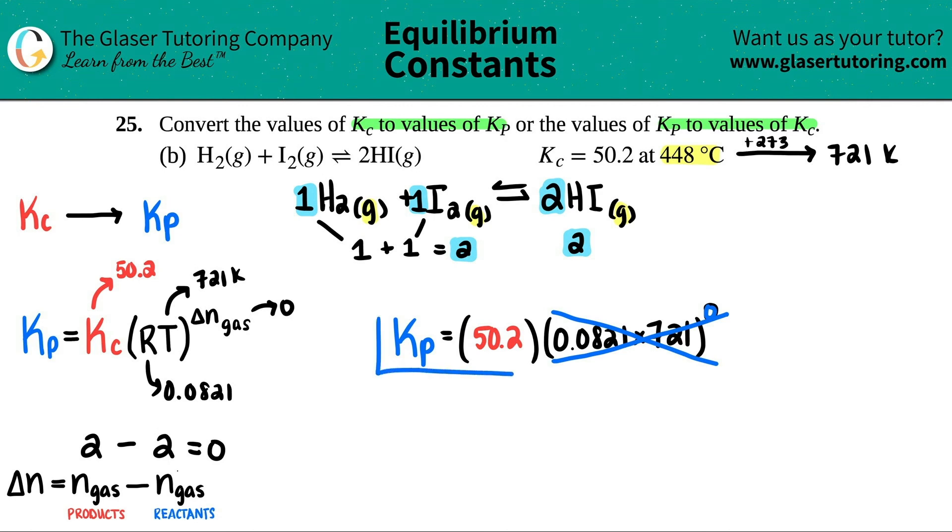And now look here, guys. I literally just have KP equal the same number. And that's true. The KP equals the KC in this case. And we've done tons of problems showing that if you do have the same number of moles on the left side as the right side in gas, the KC will equal the KP.